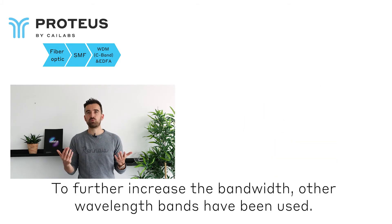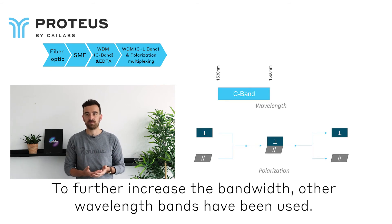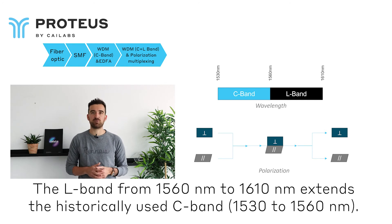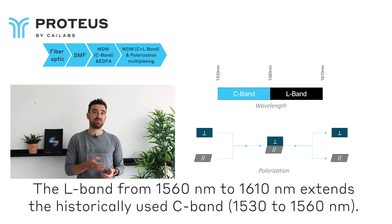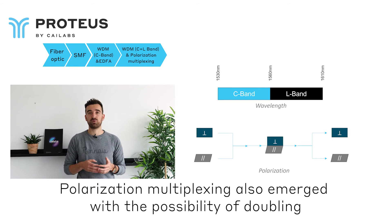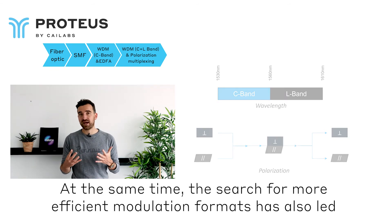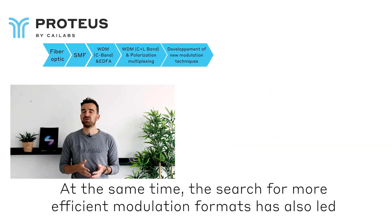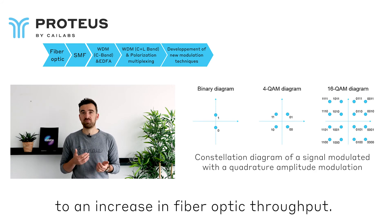To further increase bandwidths, all wavelength bands have been used. The L-band, from 1560 nm to 1610 nm, extends the historically used C-band of 1530 to 1560 nm. Polarization multiplexing also emerged, with the possibility of doubling the throughput in optical fibers — one stream per polarization state. At the same time, the push for more efficient modulation formats has also led to an increase in fiber optic throughput.